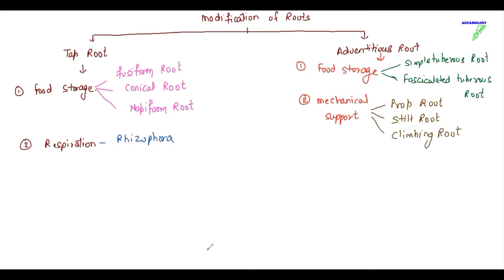We have modification for special function. So in special functions we are going to have the epiphytic root and the sucking root. Sucking roots are also called haustoria.